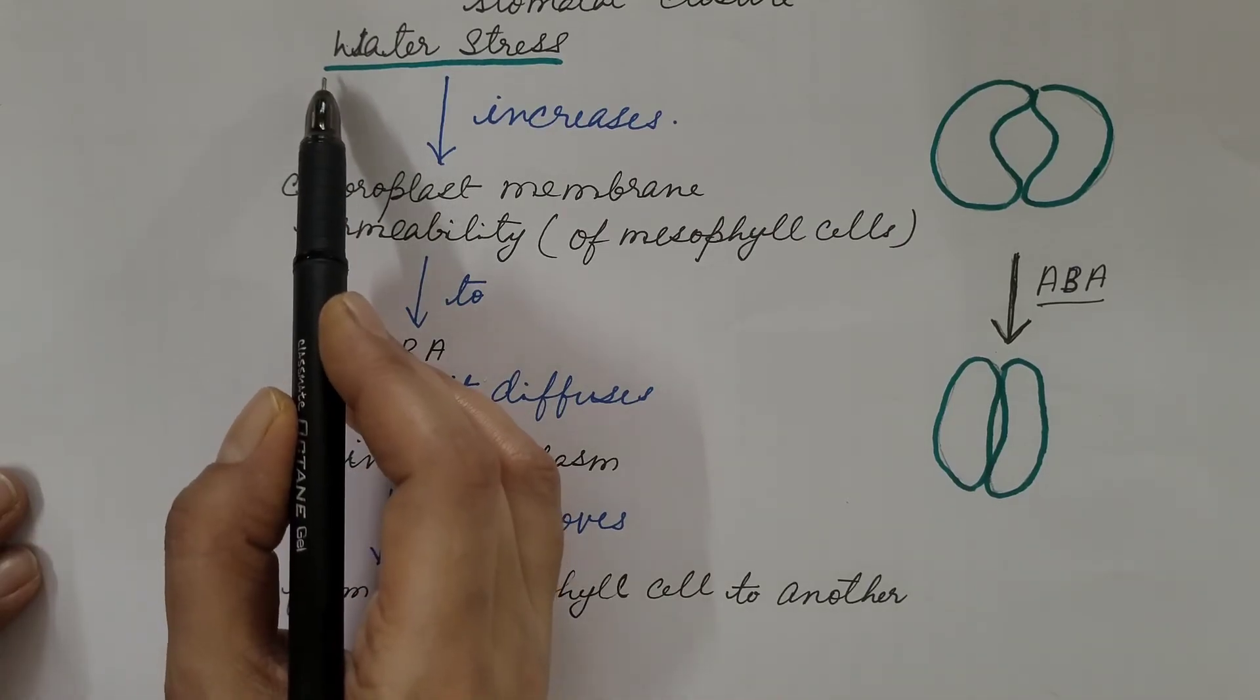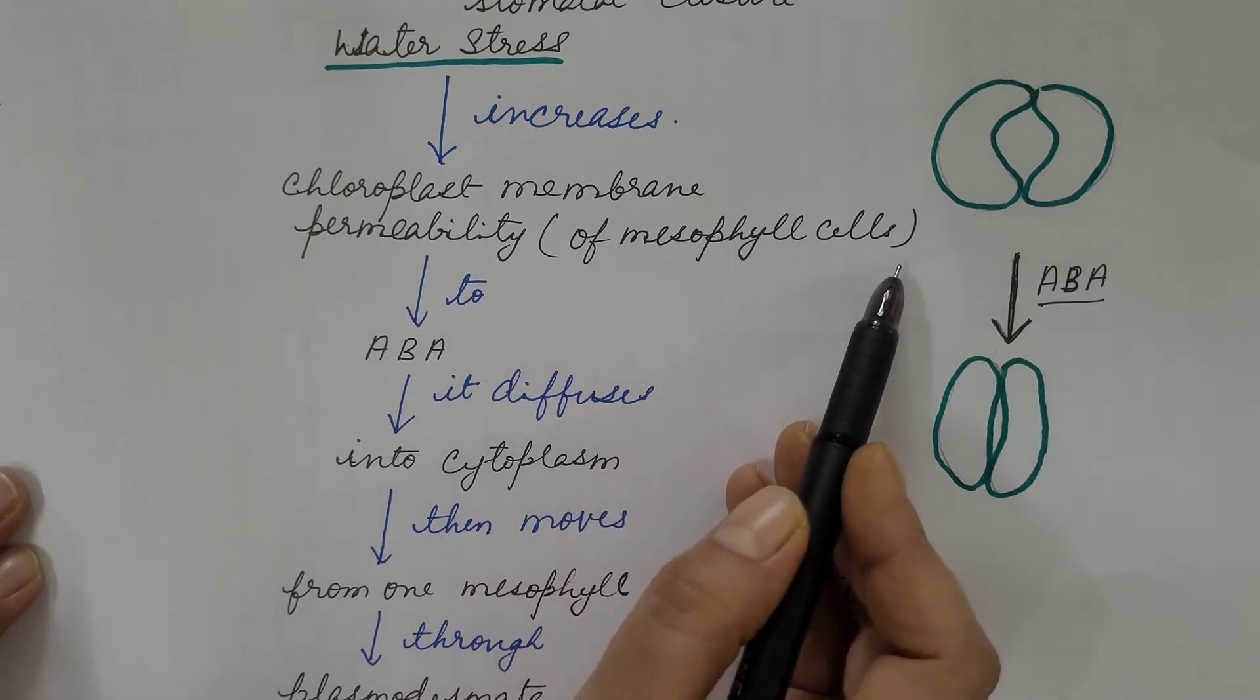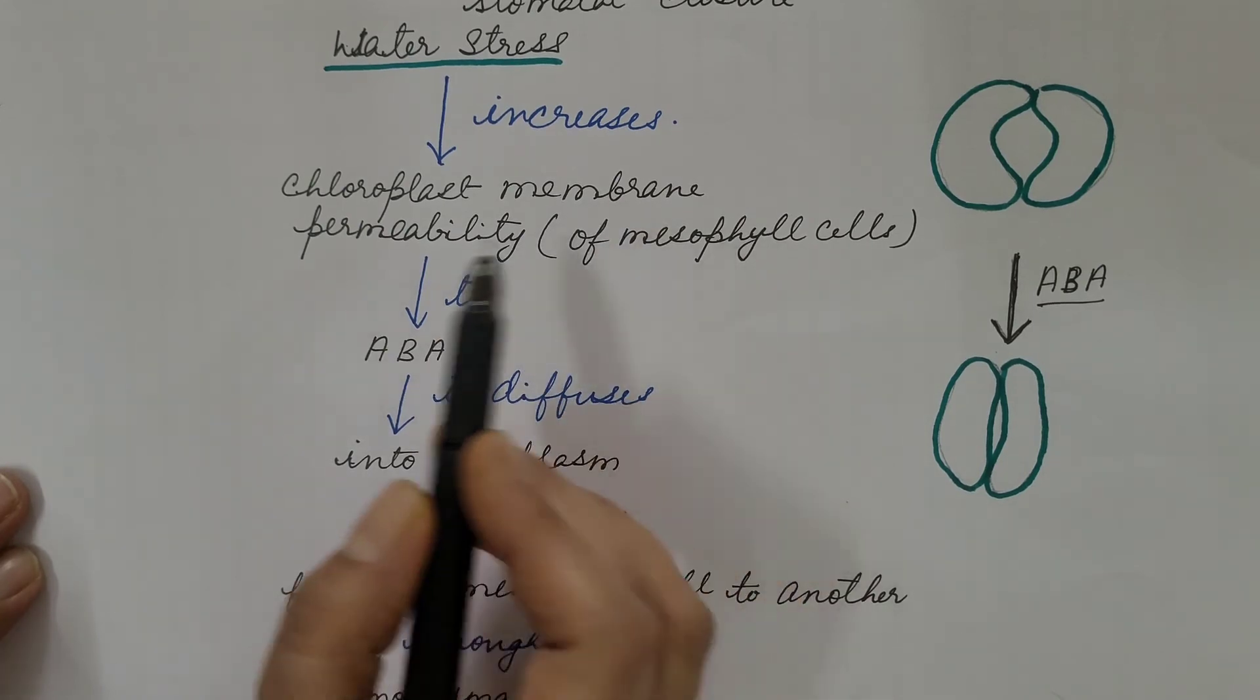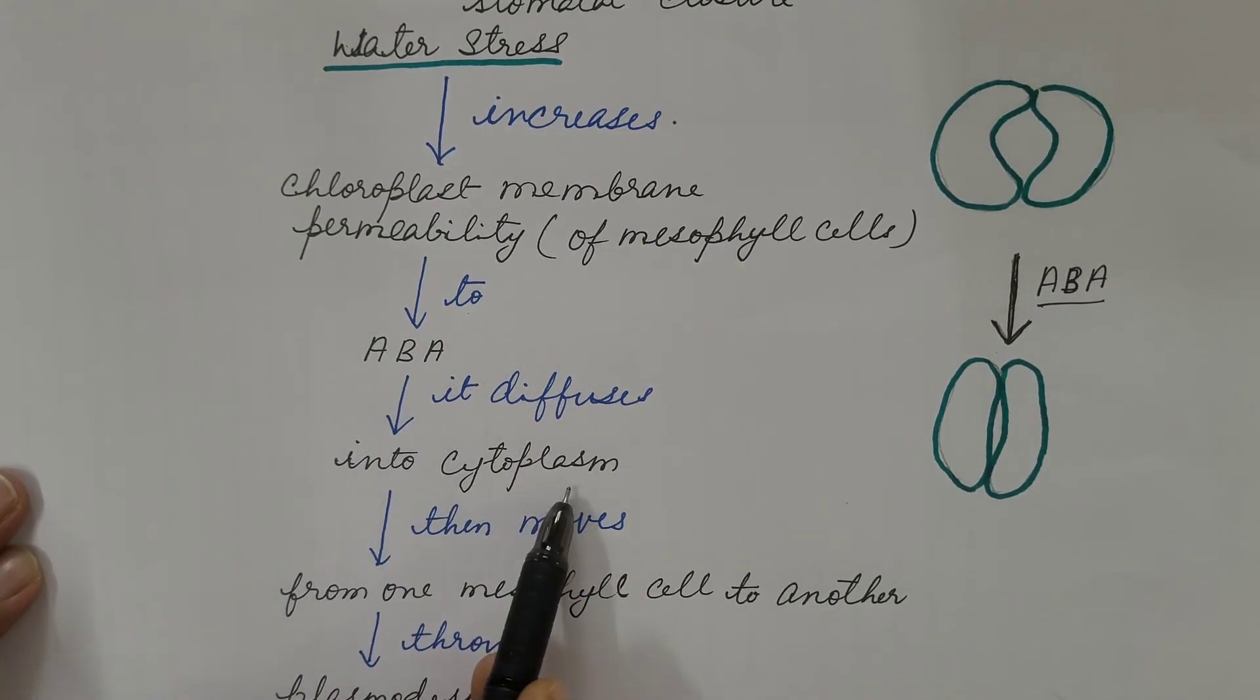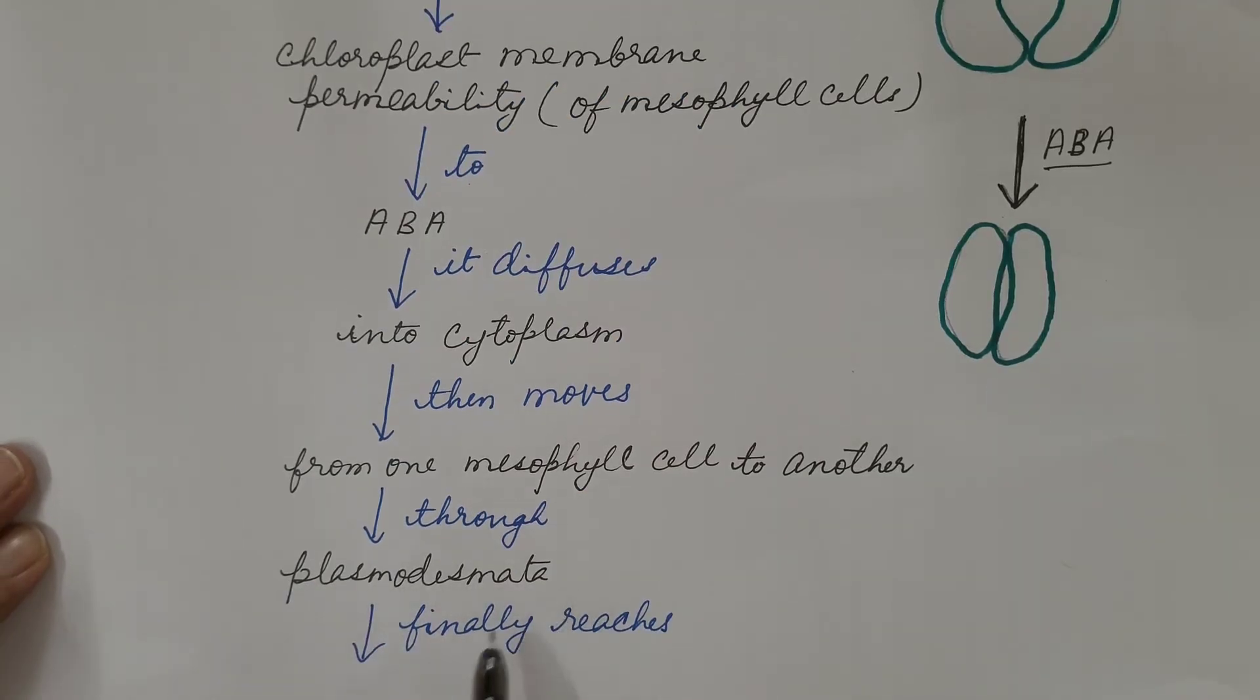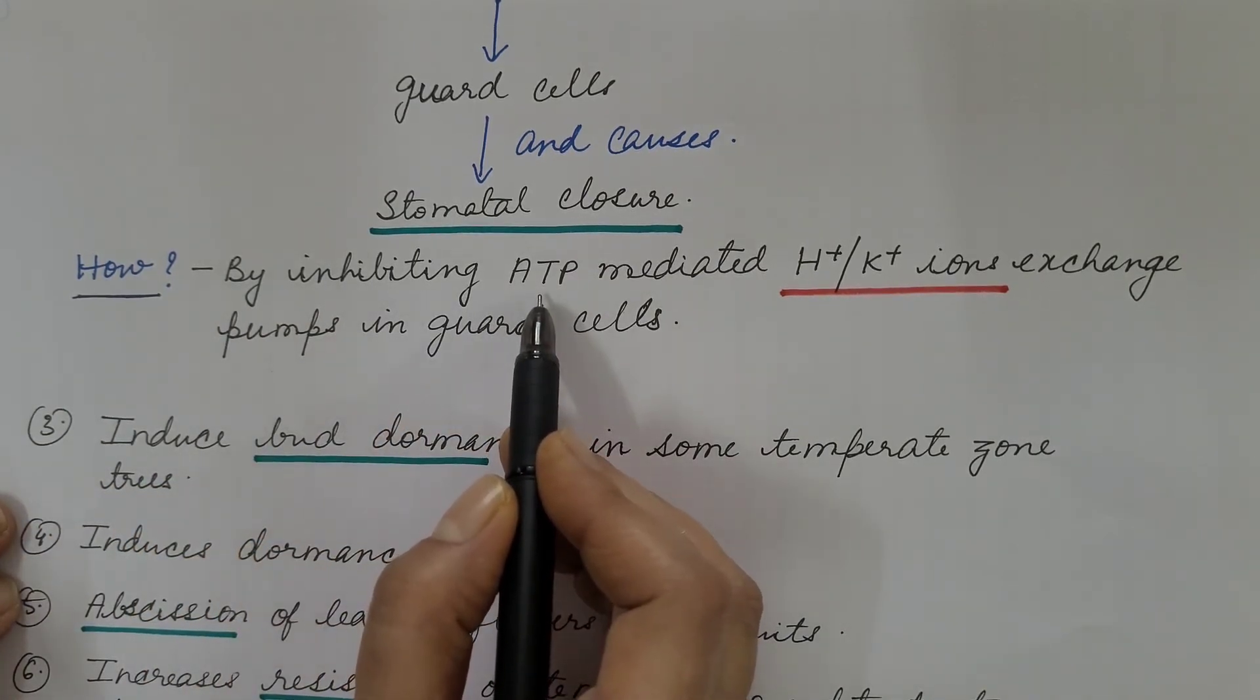So let us understand this. During water stress, permeability of chloroplast membrane of mesophyll cells increases for abscisic acid. That is, chloroplast membranes of mesophyll cells are more permeable to abscisic acid. Abscisic acid diffuses into cytoplasm, then it moves from one mesophyll cell to another through plasmodesmata, and finally reaches to guard cells and causes stomatal closure.